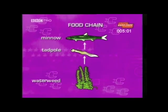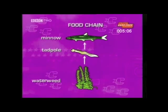Remember, in a food chain, the arrows always go from food to feeder — not the other way round. So in this case, from waterweed to tadpoles to minnows.